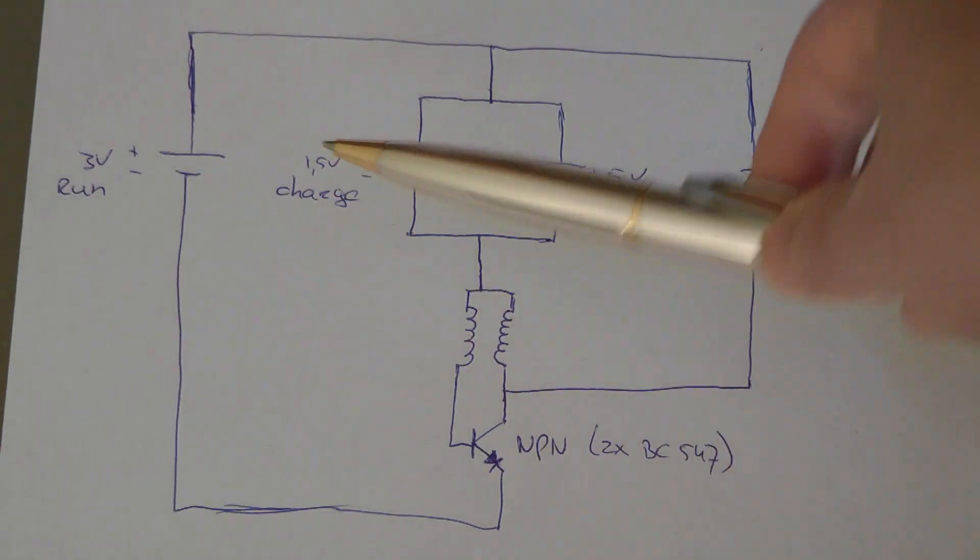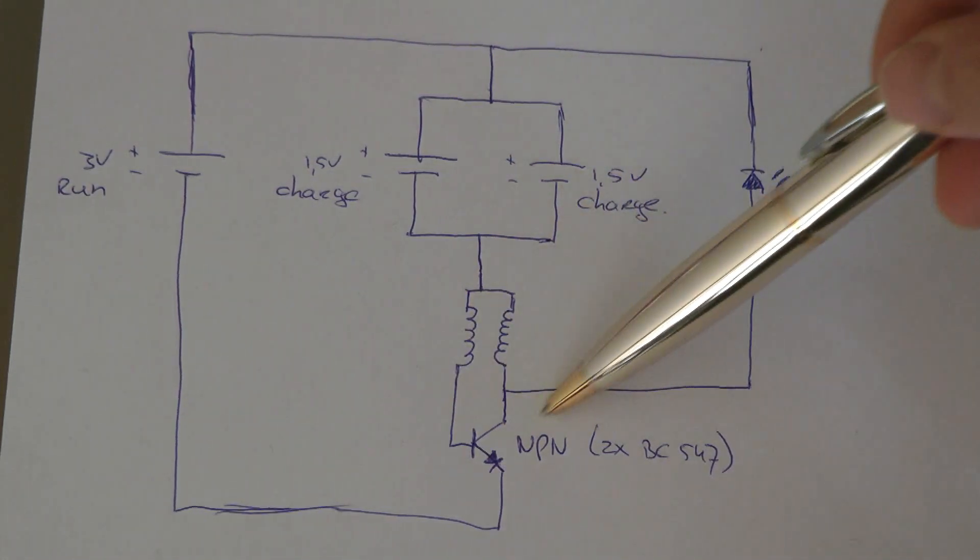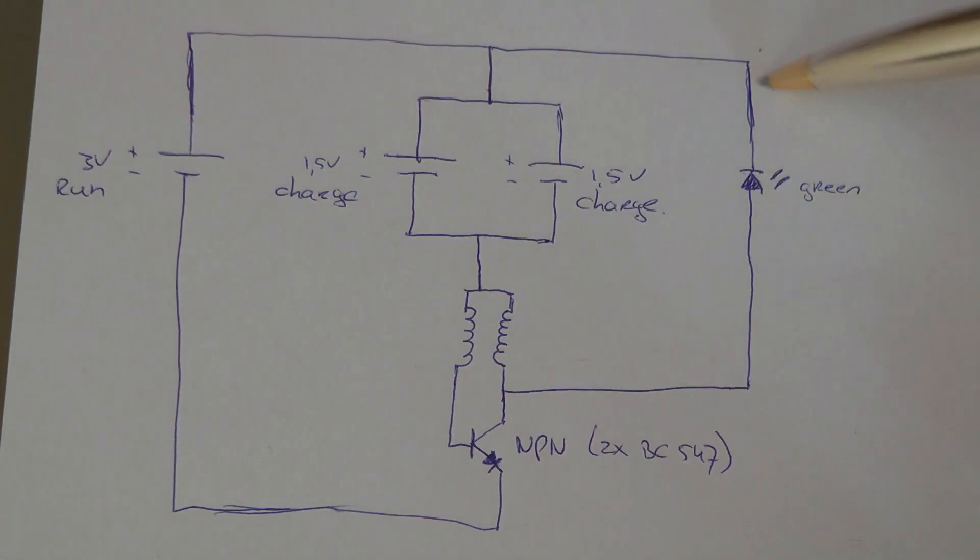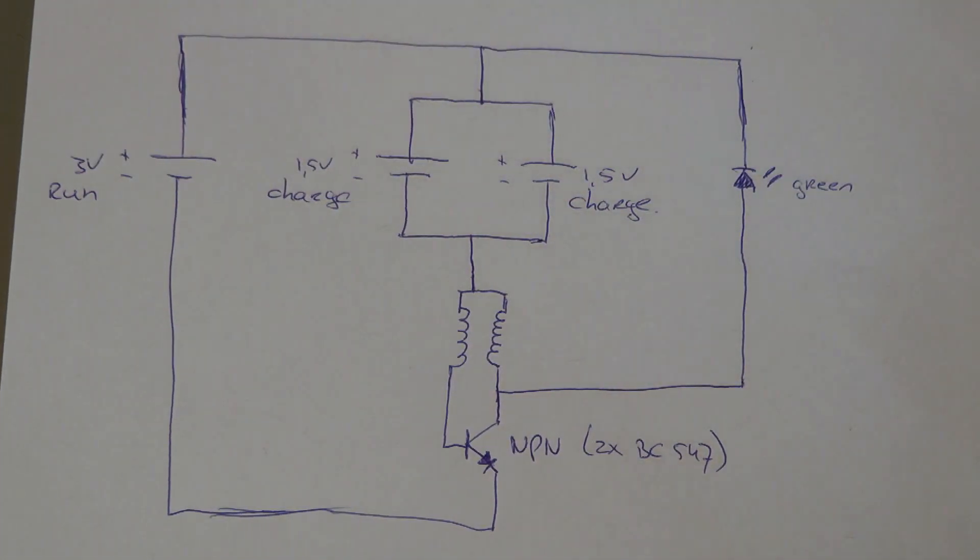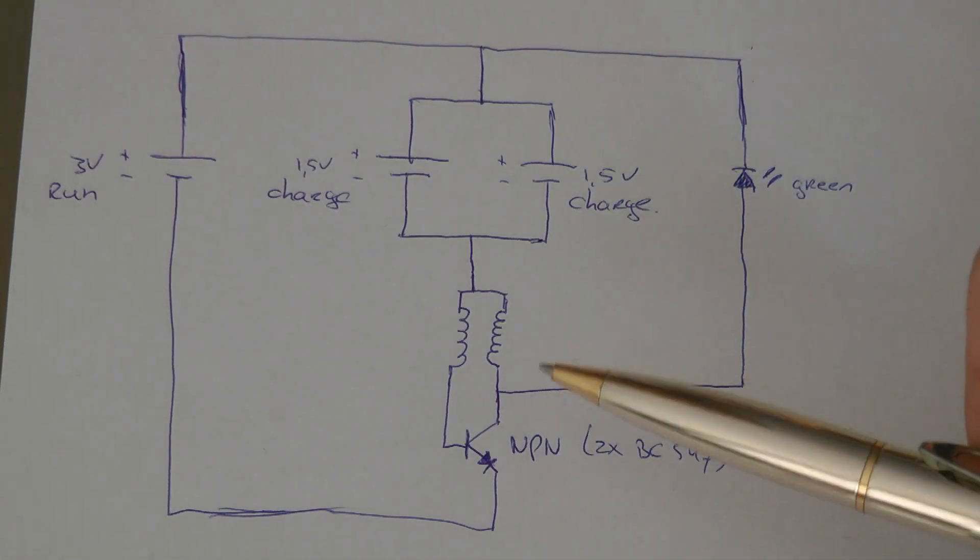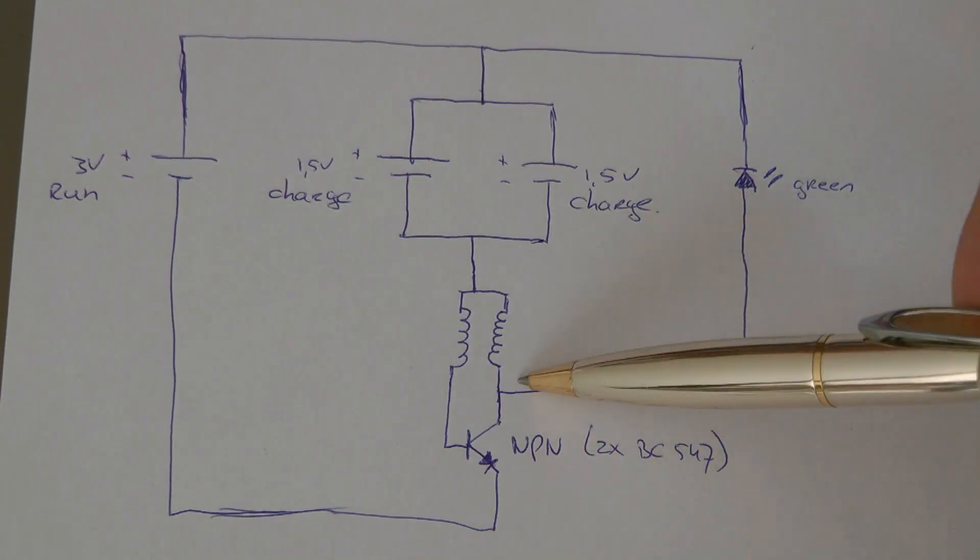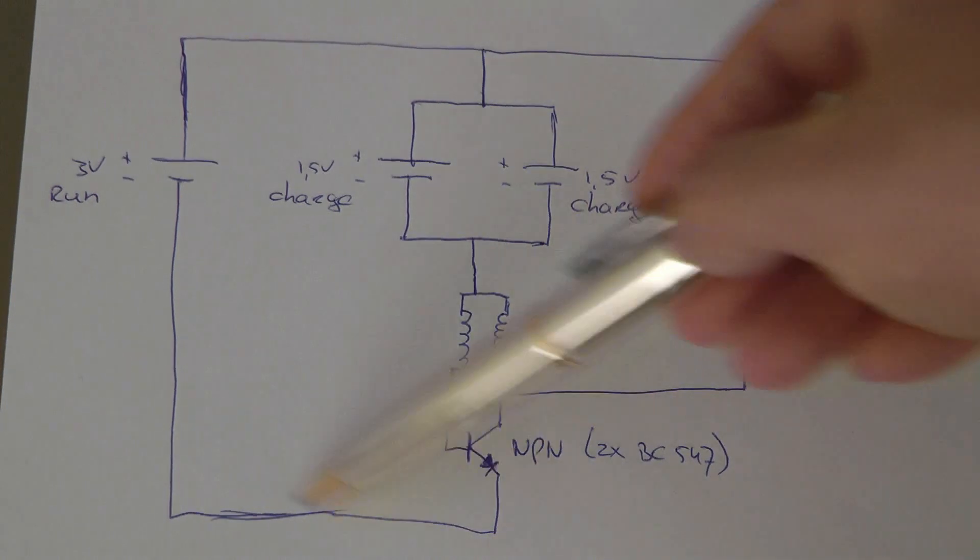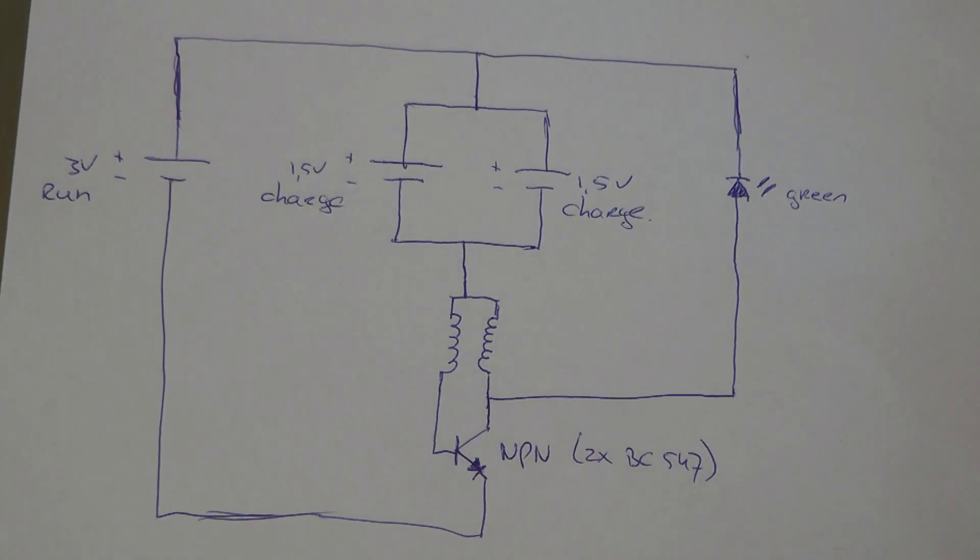The change I made here is I charge through the input before the Joule Thief toroid, so this is conventional charge. And this way the radiant spikes charge both the charge battery and the run battery. This works really great. Normally we charge through this side from positive to negative, but now we charge radiantly from positive to positive. Conventionally positive negative, radiantly positive positive.